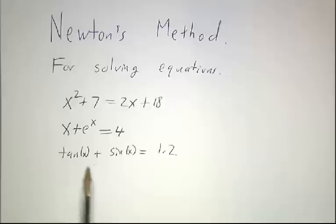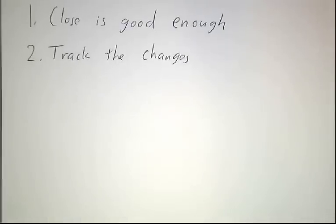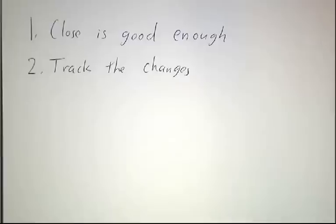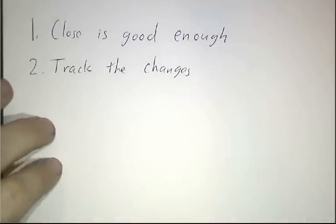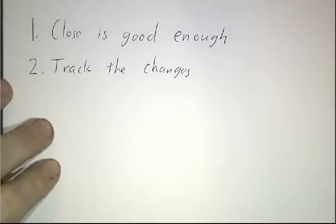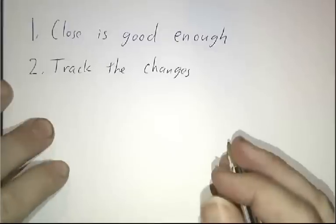So instead, we do things with Newton's method using two of the six pillars of calculus. Remember, the first pillar of calculus is close is good enough. In algebra, we look for formulas for how to get the answer exactly. In calculus, we look for ways to get close to the answer. And then we look for ways to get closer to the answer and closer to the answer with the idea of taking a limit.